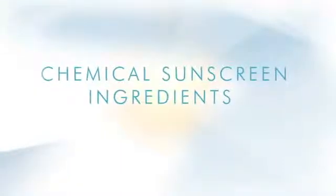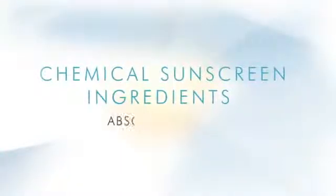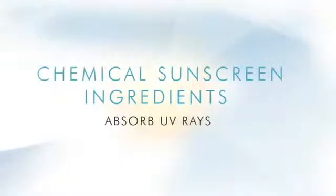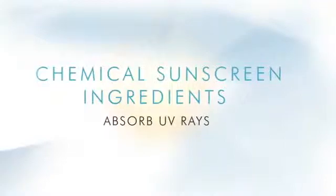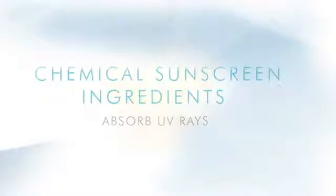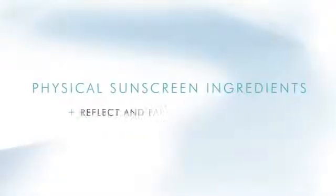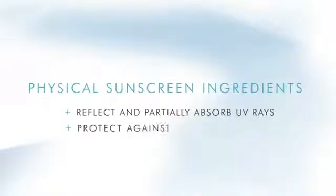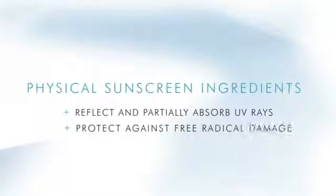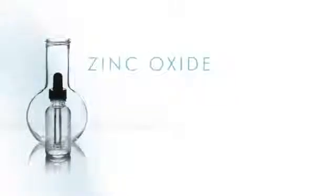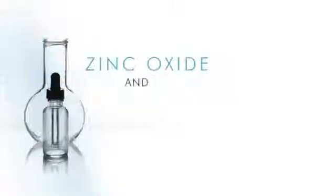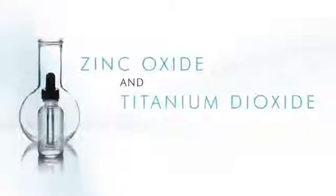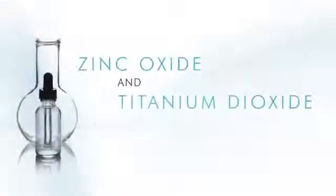Chemical sunscreen ingredients like octinoxate and octisalate absorb UV rays before they have a chance to damage cells. Physical sunscreen ingredients reflect and partially absorb UV rays and help protect against free radical damage. These ingredients include zinc oxide and titanium dioxide.